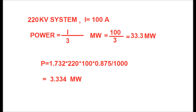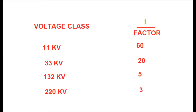So what should be the factor for different voltage classes is shown in this figure: for 11 kV, divide by 60; for 33 kV, divide by 20; for 132 kV, divide by 5; and for 220 kV, divide by 3 — to get the power in megawatts for whatever value of current.